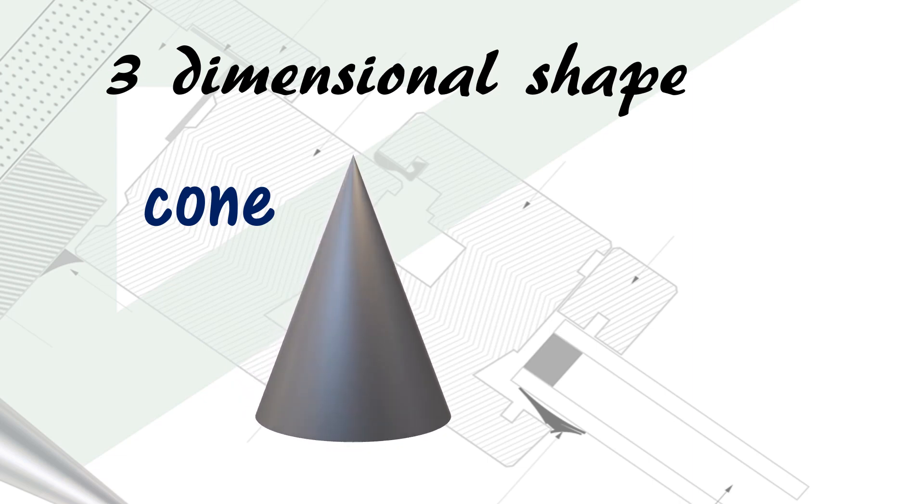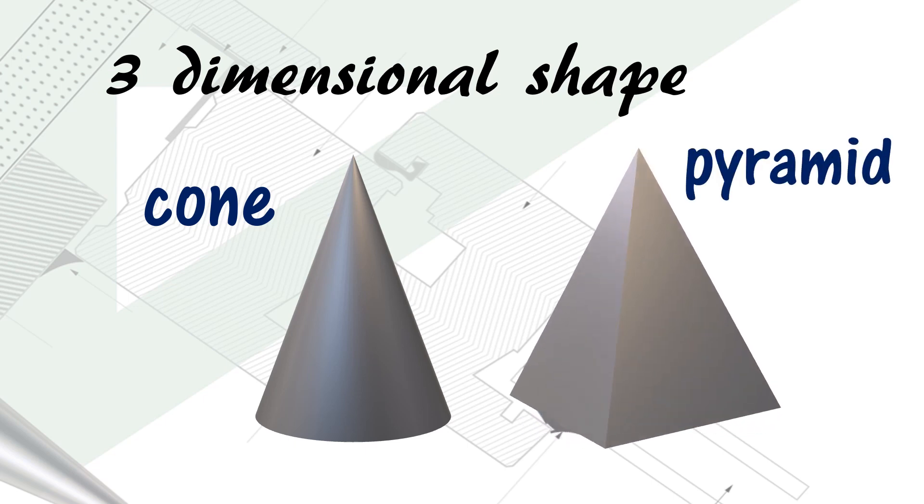Here is another triangular shape, and this one is called a pyramid. The reason for this is that the base is a square. So a square base is a pyramid and a round base is a cone.